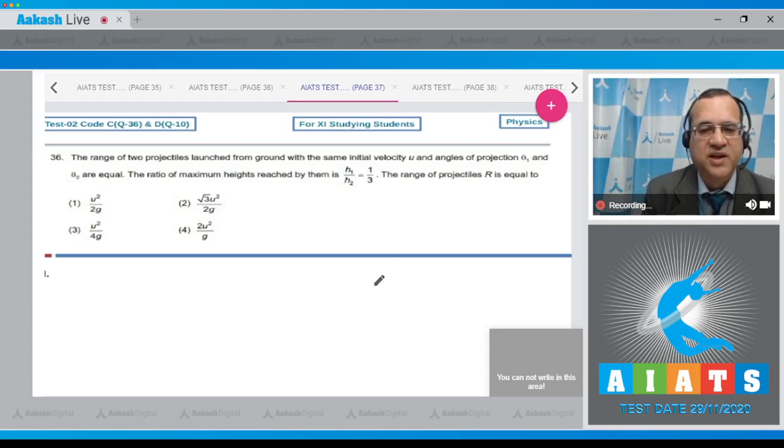The range of the projectile - for the same range r1 is equal to r2, if one angle is theta 1, the second angle will be 90 minus theta 1.